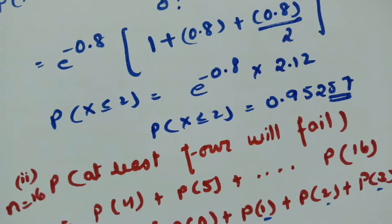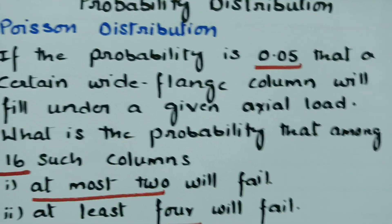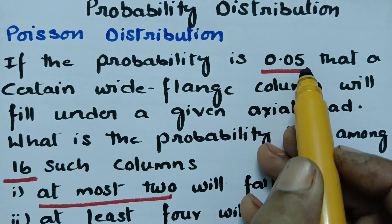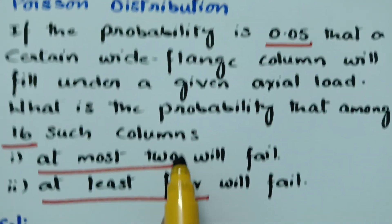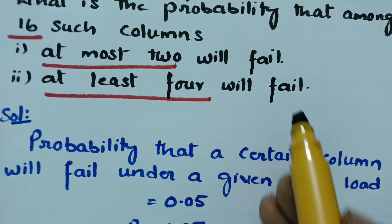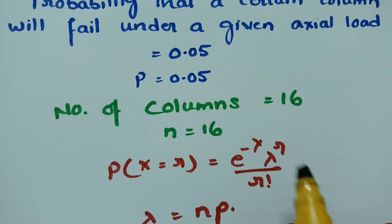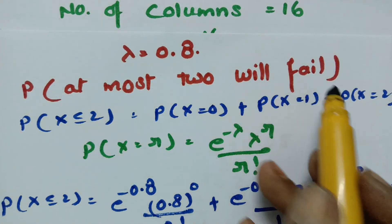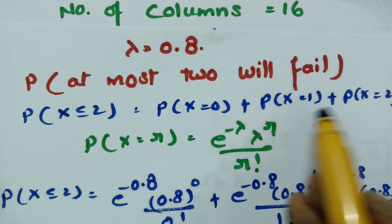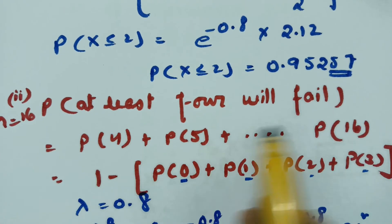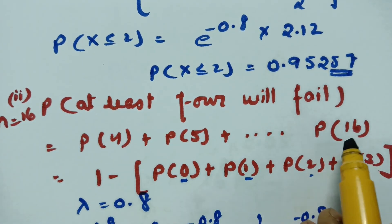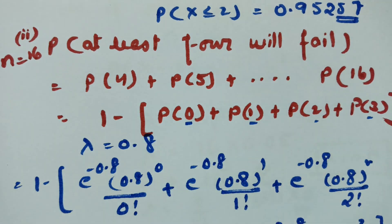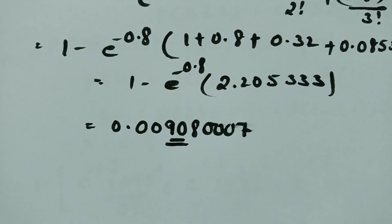This is how we solve the problem. Given: probability = 0.05 that a wide flange column will fail; n = 16 columns; lambda = 0.8. For at most 2 will fail (X ≤ 2), the answer is 0.95257. For at least 4 will fail (using complement from 0 to 3), the answer is 0.00908007. Thank you so much.